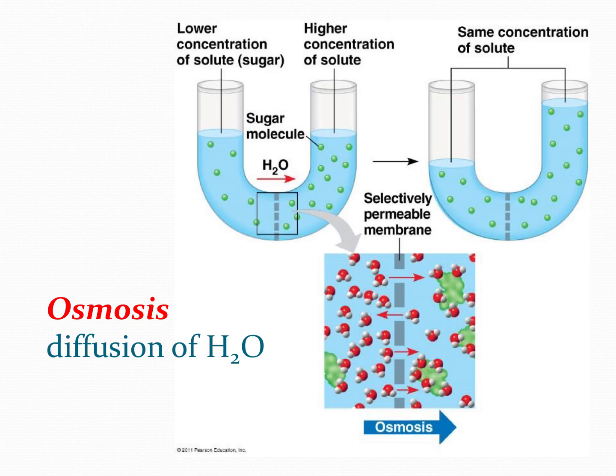Osmosis is a particular type of passive transport — specifically a type of facilitated diffusion — in which we talk about the movement of water. Osmosis is the diffusion of water in particular. Water is polar, so it's not going to be able to diffuse straight across the phospholipid bilayer; it needs to be facilitated through a protein. The specific protein it goes through is called an aquaporin — an intermembrane protein specific to water movement.